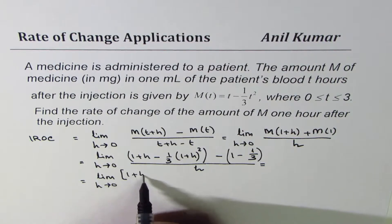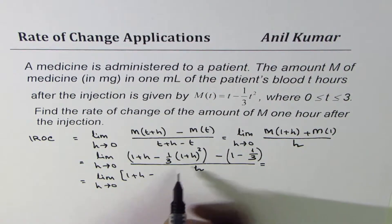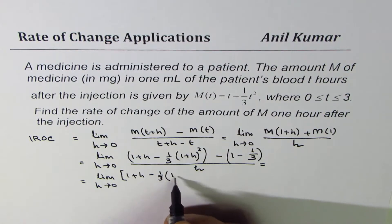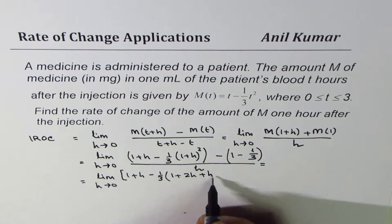Now we can expand this. So if I expand, I get, okay this will be insufficient so let me do here: limit h approaches 0. So in this expression we have 1+h minus 1/3 of (1 + 2h + h²).